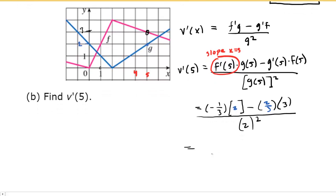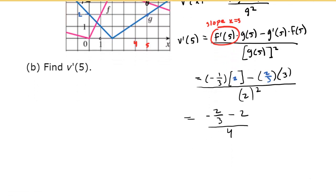We will go ahead and simplify this. Perhaps you're allowed to use a calculator. But on the top, you would have negative 2 thirds minus 2, all divided by 4. My own preference to simplify this is to multiply everybody by this denominator. So I'm going to multiply everybody by 3. So this one times 3, this one times 3, and that one times 3. That's going to give me negative 2 minus 6 over 12. Negative 8 over 12. Divide the numerator and denominator by 4. We're going to get negative 2 thirds. So that would be the correct answer to part B.